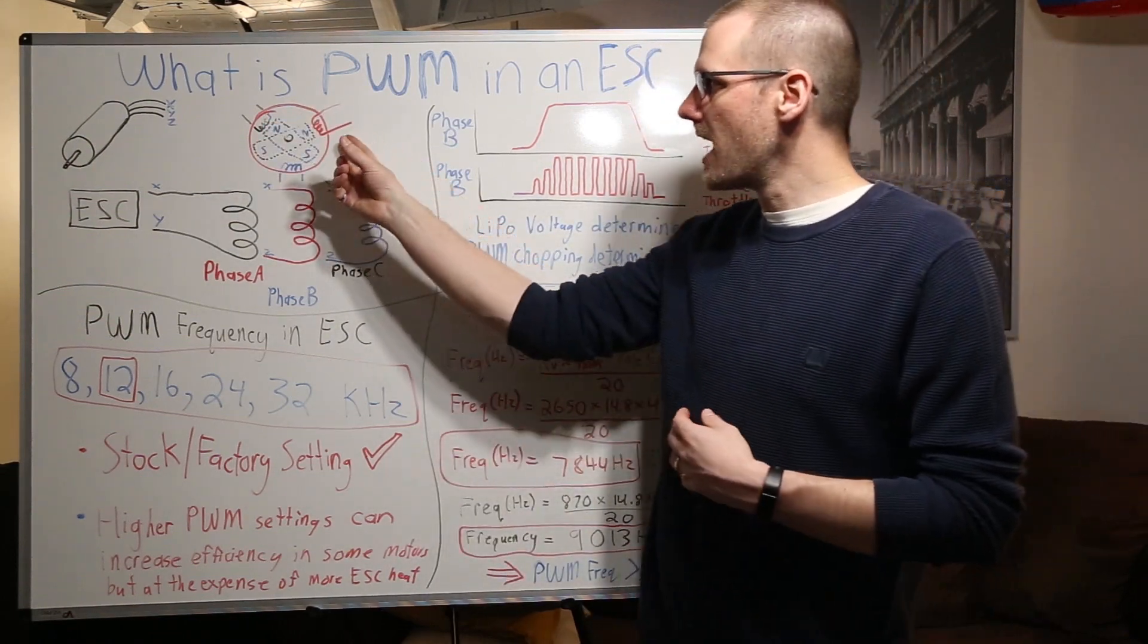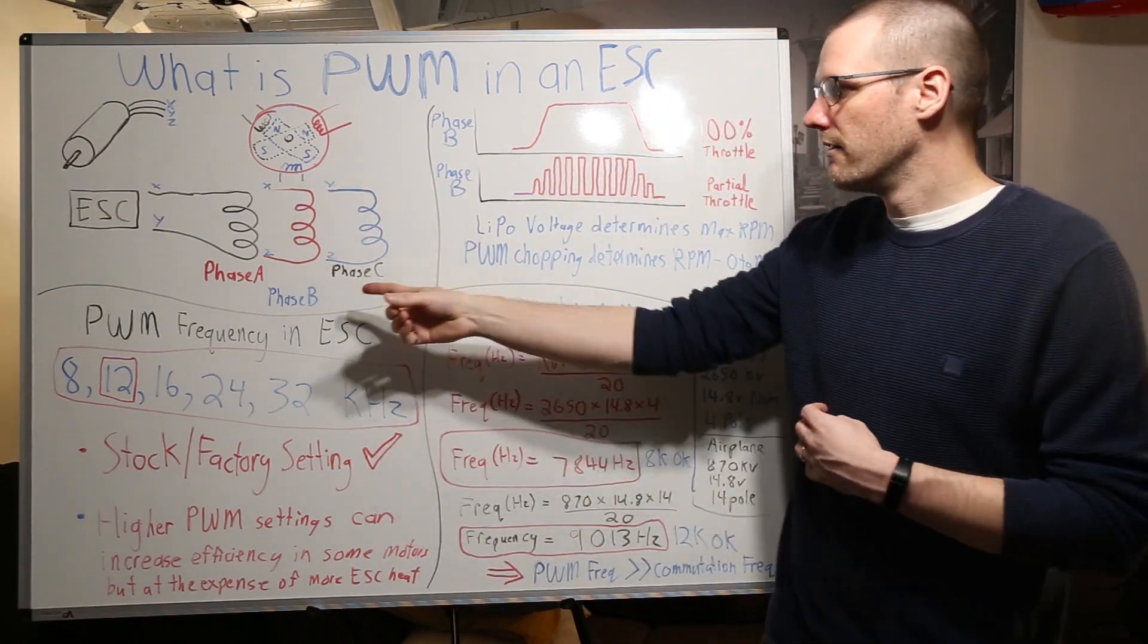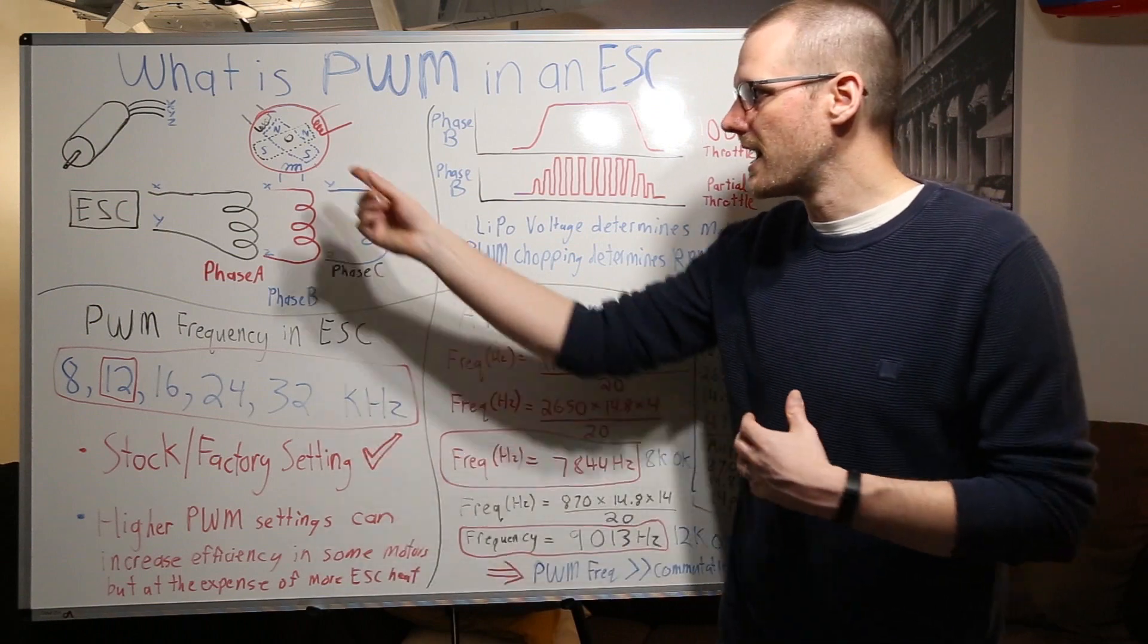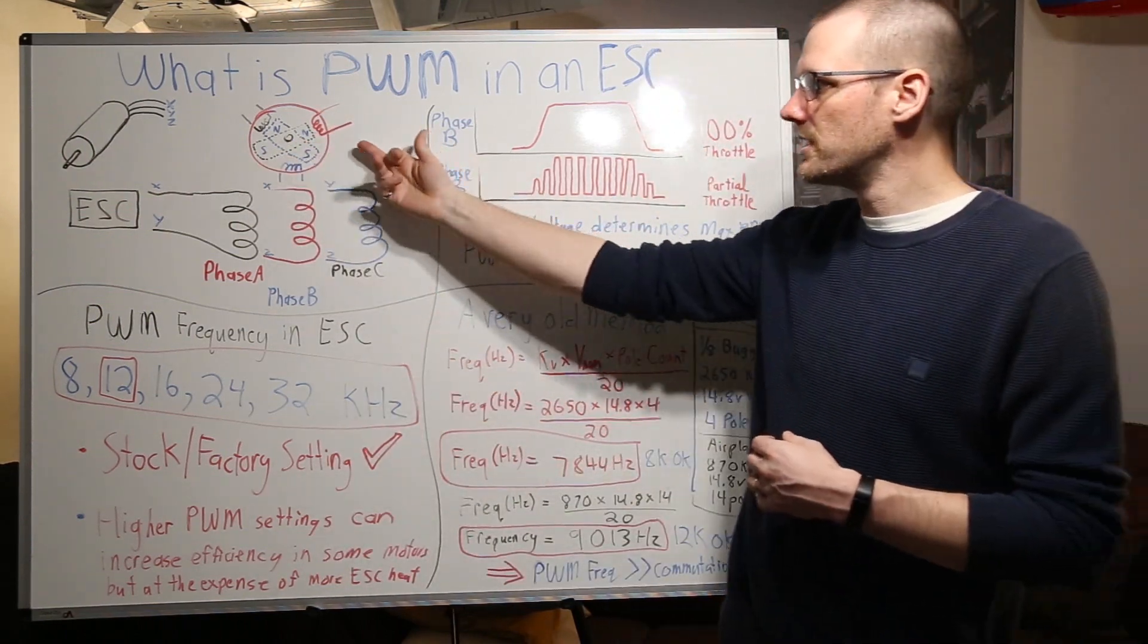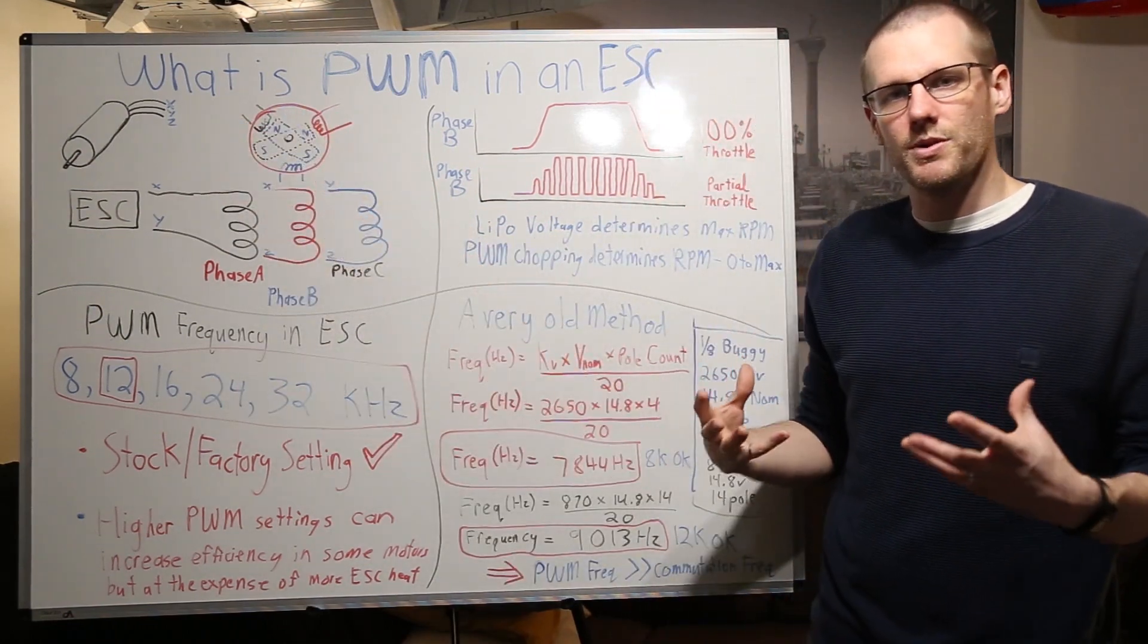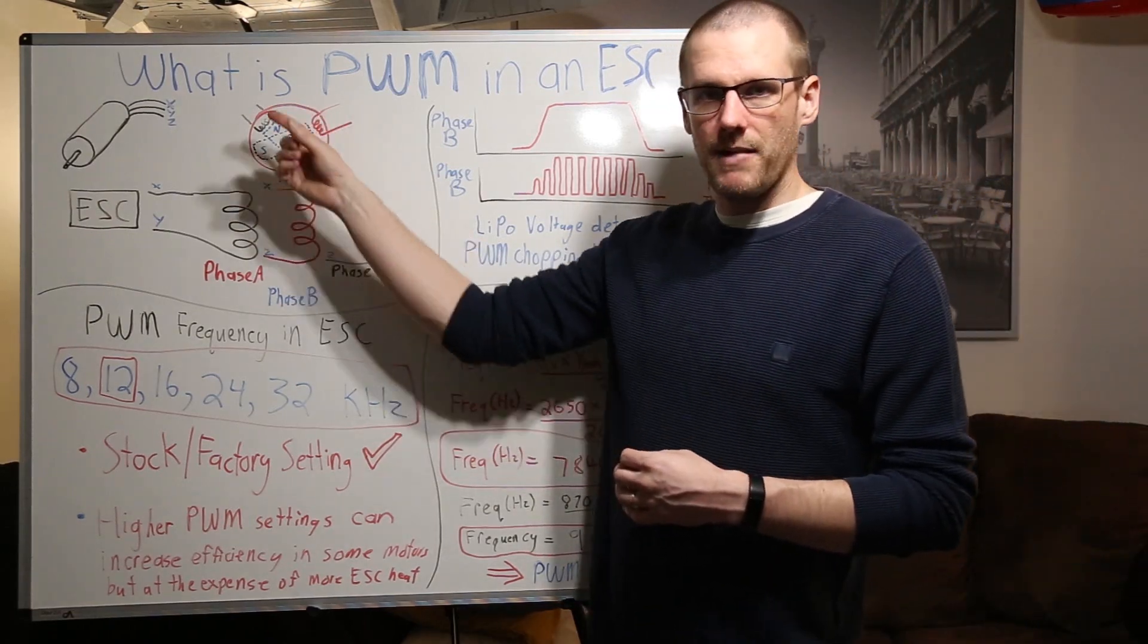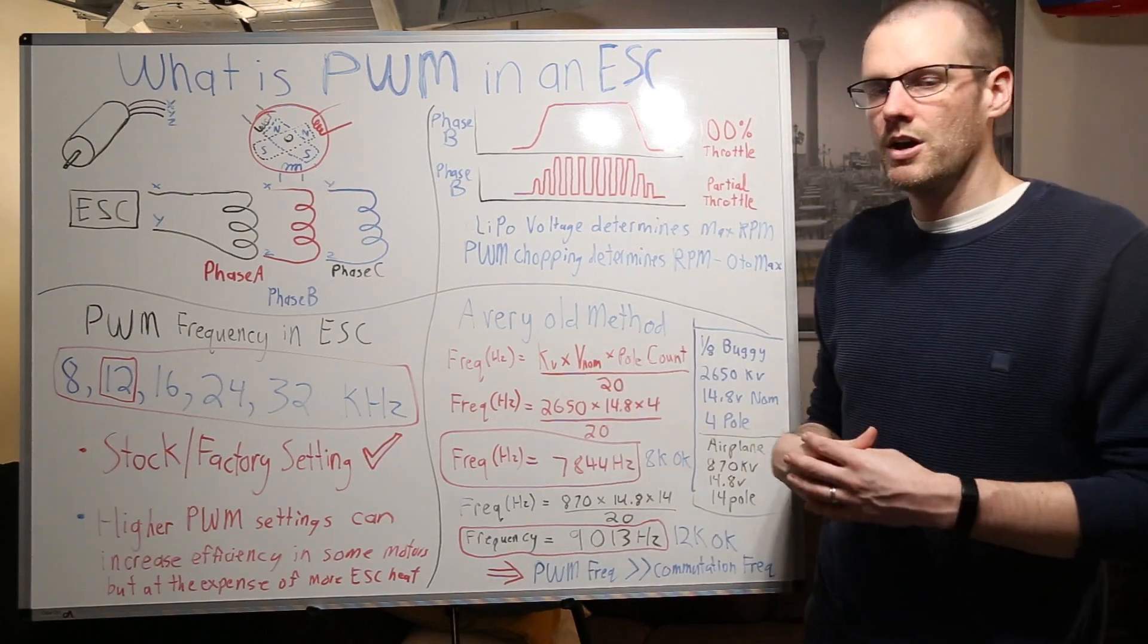Now the same thing is happening here. As this north pole comes and swings by, we want to make sure that that phase B is producing our north pole so that it can repel, and as the south pole comes around, we need to go and invert things again to produce that south pole to repel. And you can see all three of these phases are going to be doing the exact same pattern every single time that magnet comes around. It's going to be alternating between those north and south poles when required.